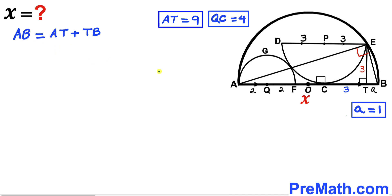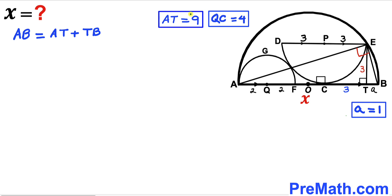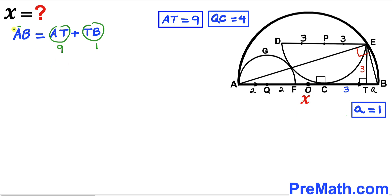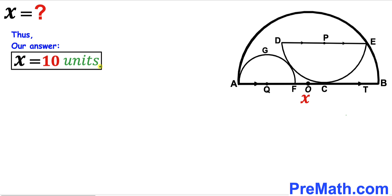Now we can see that the whole diameter AB equals segment AT plus tiny segment TB. AT is 9 and TB is lowercase a which is 1, and diameter AB is represented by x. Therefore x = 9 + 1, giving us x = 10 units. So the diameter of the largest semicircle is 10 units — and that's our final answer.